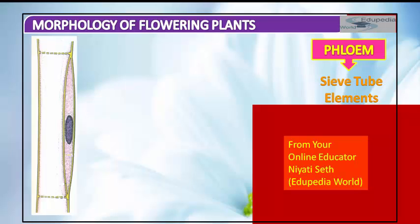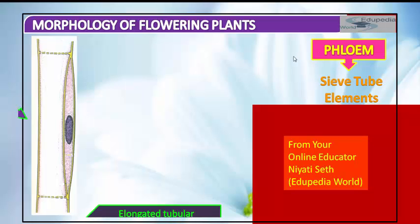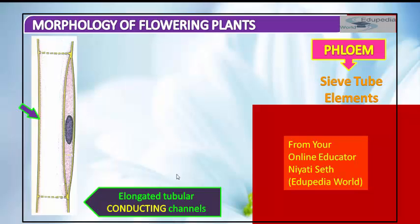The function of the sieve tube is controlled by the nucleus of the companion cell, because the companion cell is closely associated with the sieve tube element. The end walls of sieve tube elements are perforated in a sieve-like manner to form sieve plates. Sieve plates are areas of the phloem with large pores; these openings allow food products to move into and out of the phloem for transport to different areas of the plant.